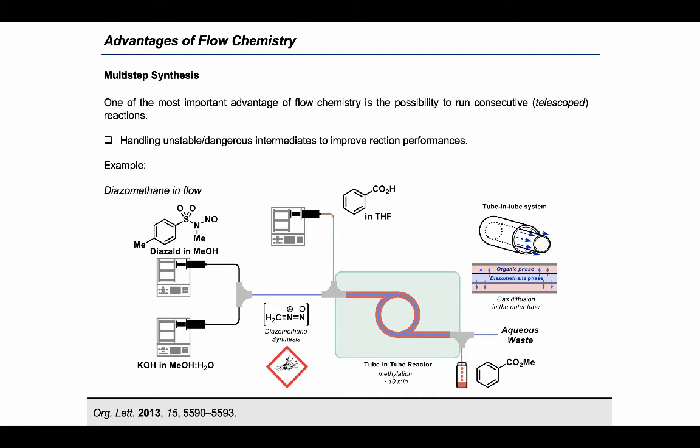A striking example is the generation of the explosive reagent diazomethane, generated in a tube-in-tube system where the gaseous reagent could diffuse to the external concentric reactor where it was allowed to react with benzoic acid to generate the corresponding methyl ester in high yields without any potential harm for the operator.